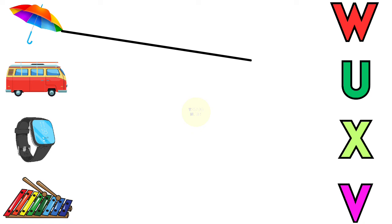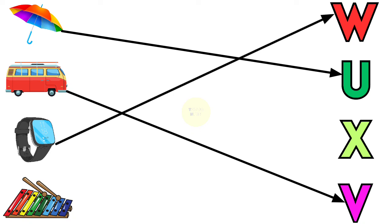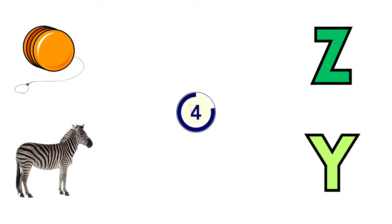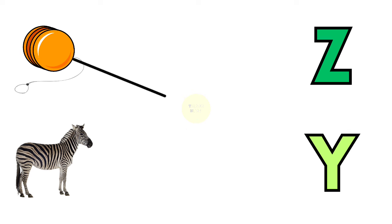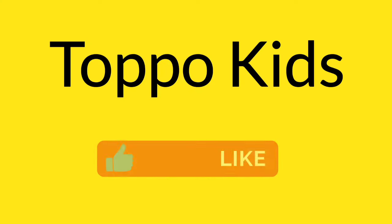U for umbrella, V for van, W for watch, X for xylophone, Y for yak, Z for zebra. Please subscribe Topo Kids.